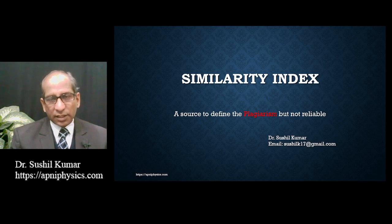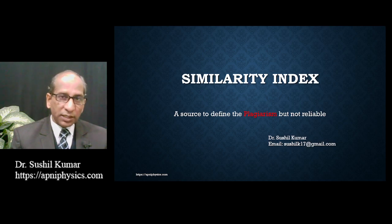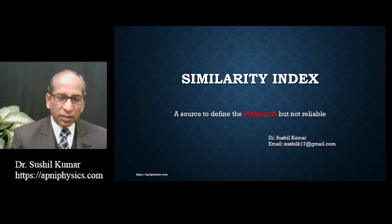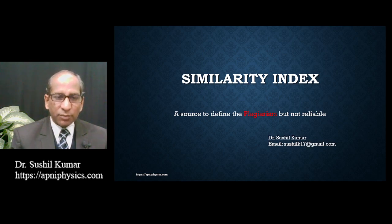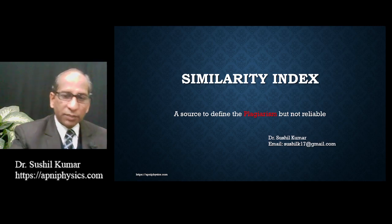I have quoted one reference which defines a range of similarity index at which an article could be rejected or accepted, and what should be the range of the individual source. There are many things to cover. If you think I am wrong at any point, leave a message. By this way we can spread awareness about similarity index and plagiarism. We will discuss the root causes and how one can avoid it.